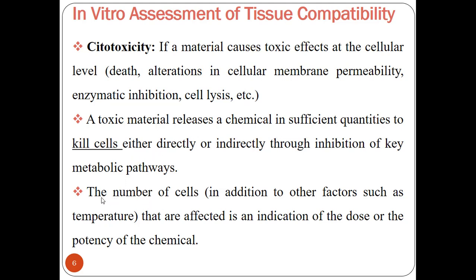The number of cells that are affected is an indication of the dose or the potency of the chemical — that is, how toxic this chemical is. The number of cells affected indicates how potent or toxic the chemical is.